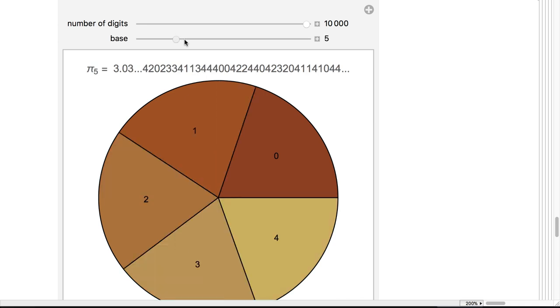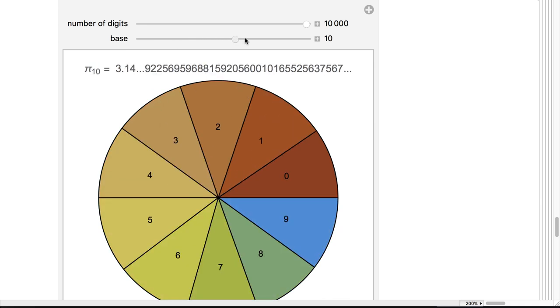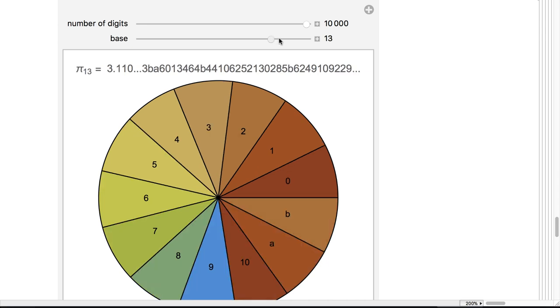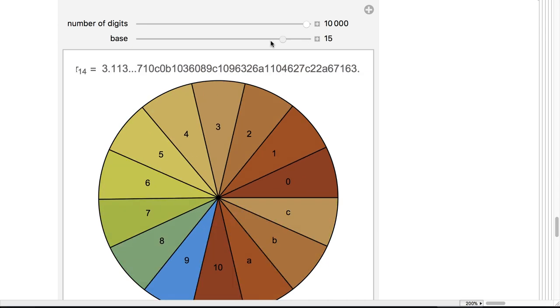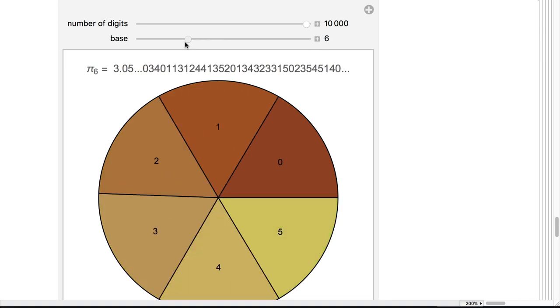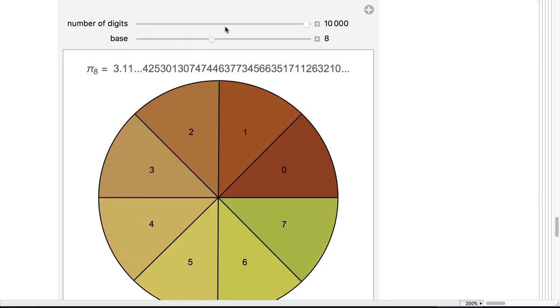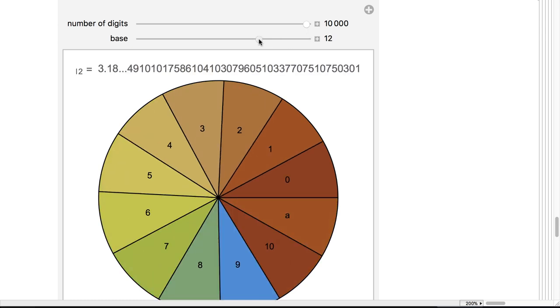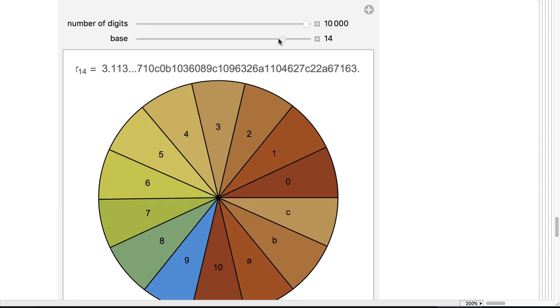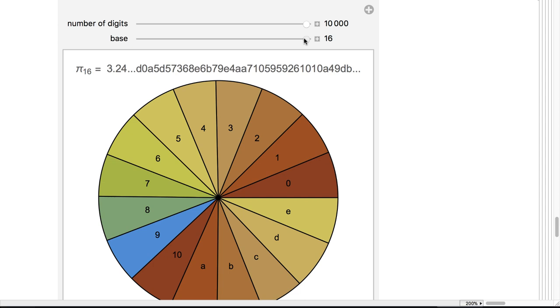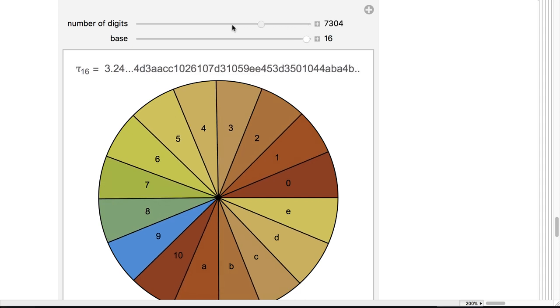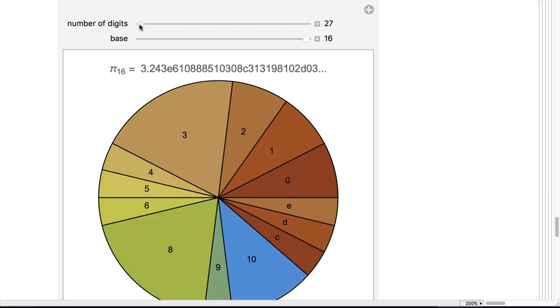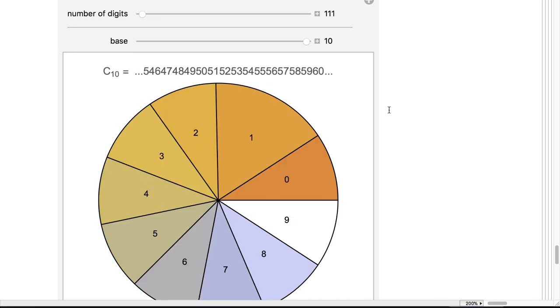While it is not known for sure if pi is Borel normal or absolute Borel normal, all the statistical evidence suggests it is. In this plot, for example, we can go through a long segment of digits of pi and see how all the pieces of the pi chart representing each of the digits of pi gets about the same size the greater the number of digits that are produced. And only at the very beginning there are small noticeable fluctuations, and this happens in all bases. However, normality does not capture the concept of randomness either.